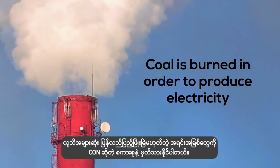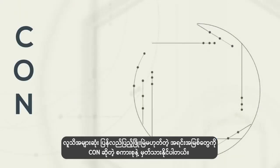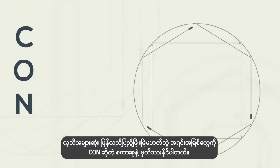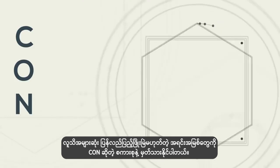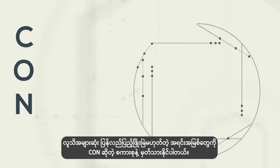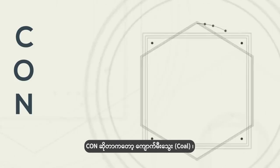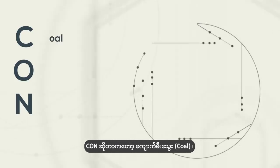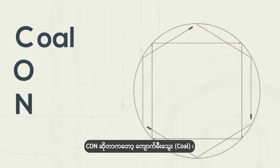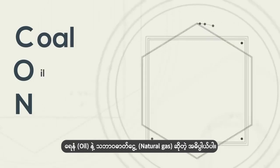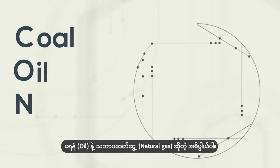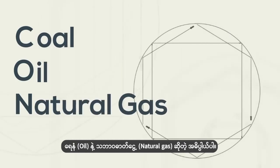You can use the phrase CON to remember three popular non-renewable resources. This stands for coal, oil, and natural gas.